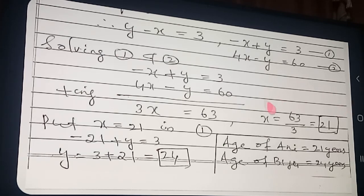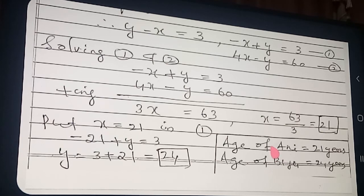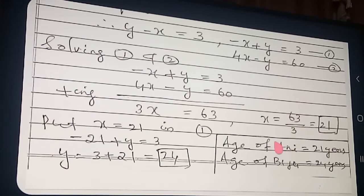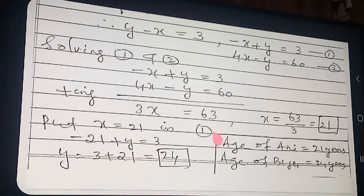We had to take two cases because the difference between their ages is given but who is elder was not specified. So both cases are needed. Students, Exercise 3.6 is now complete. Bye.